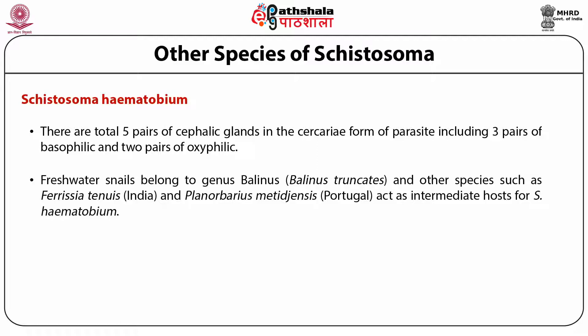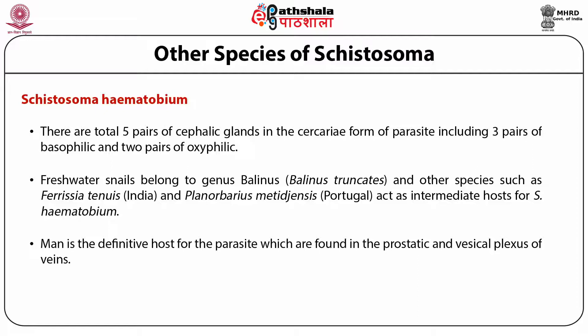There are total 5 pairs of cephalic glands in the cercaria form of the parasite, including 3 pairs of basophilic and 2 pairs of oxyphilic. Freshwater snails belong to the genus Bulinus, Truncatus and other species such as Physacea, Tunis, India, and Planorbarius dufourii of Portugal, act as intermediate hosts for Cystosoma haematobium. Man is the definitive host for the parasite, found in the prostatic and visceral plexus of veins. The life cycle of Cystosoma haematobium is the same as that of Cystosoma mansoni.